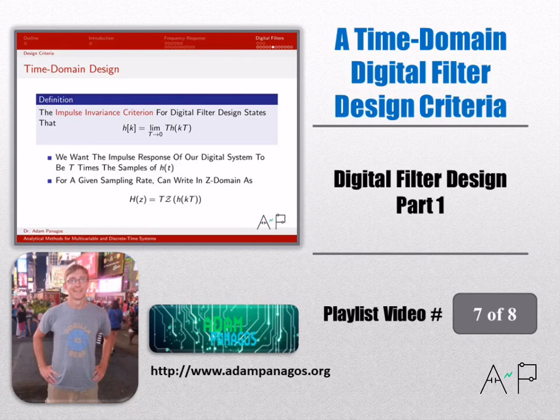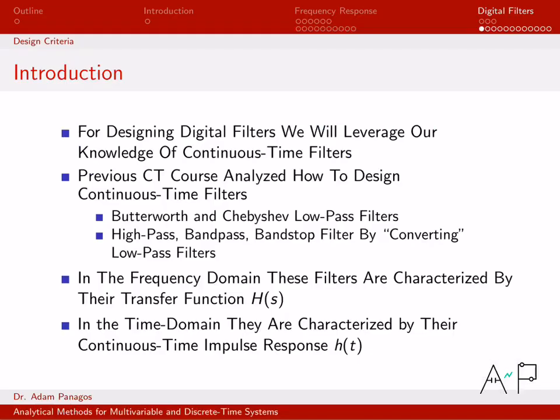In this video and the next video we're going to come up with some filter design criteria that are more precise — specifically how we can take an existing continuous time filter design and map that over to an equivalent discrete time filter. In this video we're going to look at a time domain criteria that will let us do that. Our real goal is to take a continuous time filter and adapt it to an equivalent digital filter.